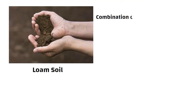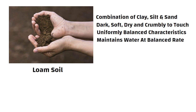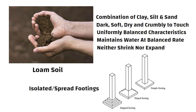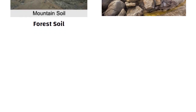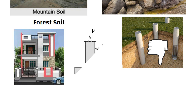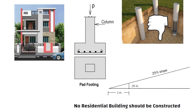Loam is a combination of clay, silt, and sand. It is dark in color, soft, dry, and crumbly to touch. Loam is the best option to support foundations because of its uniformly balanced characteristics. It maintains water at a balanced rate and hence neither shrinks nor expands to an extent that damages foundations. Isolated footing is the most desired type of foundation for loam soil. Mountain soils and forest soils are most likely to have boulders at various depths, so pile foundations are not suitable here. For residential buildings with one or two floors, isolated RCC pad footings are suitable. No residential buildings should be constructed on slopes steeper than 25 degrees.